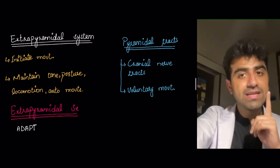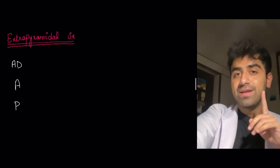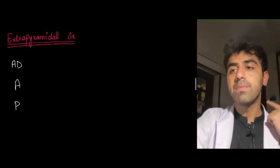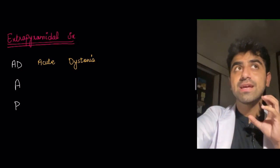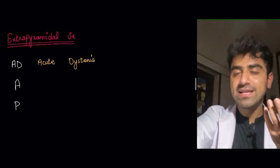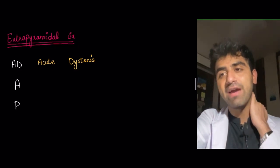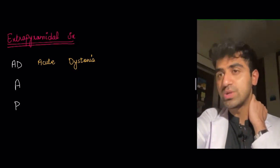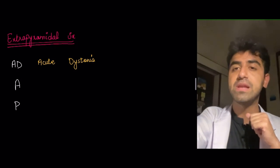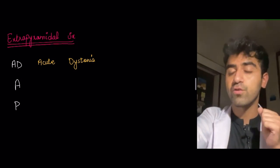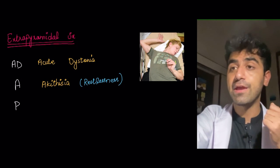Before we start with extrapyramidal symptoms, remember the mnemonic ADAPT — A, D, A, P, T. Starting with acute dystonia: I point toward my neck because dystonia involves something wrong with the sustained contraction of the muscle. The person may have a sustained contraction of their neck, known as torticollis — a sustained or transient muscular contraction that can be extremely painful and disruptive for the patient.